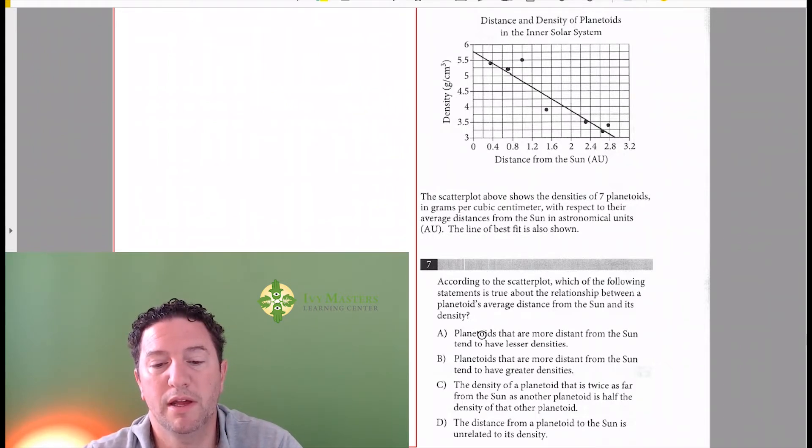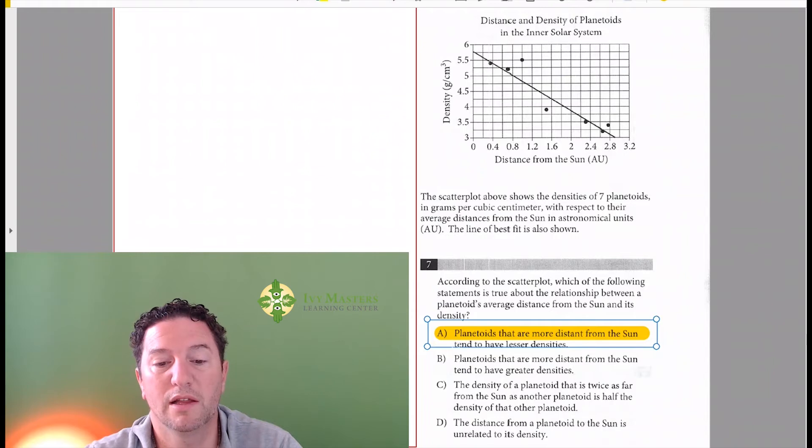Answer choice A: Planetoids that are more distant from the sun tend to have lesser densities. So, more distant, lesser density—it looks like that's our answer. I'm going to highlight it right off the bat.